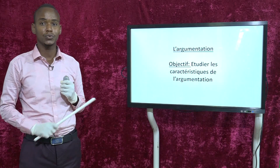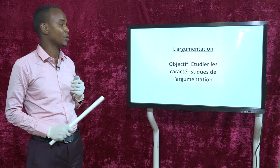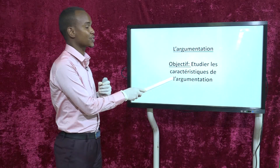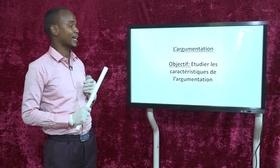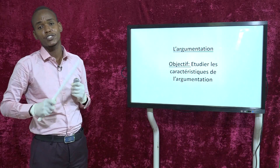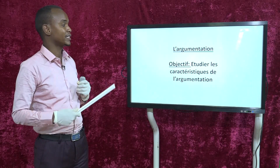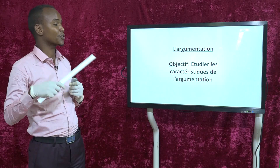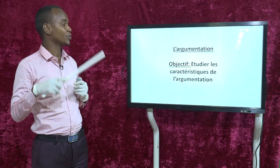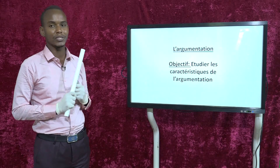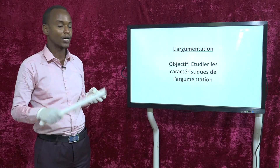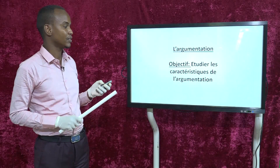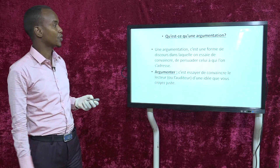L'objectif qu'on va étudier tout au long de cette leçon, c'est étudier les caractéristiques de l'argumentation. C'est-à-dire étudier et apprendre les différents éléments dont est constituée l'argumentation, c'est-à-dire les différents points qui vont composer l'argumentation.